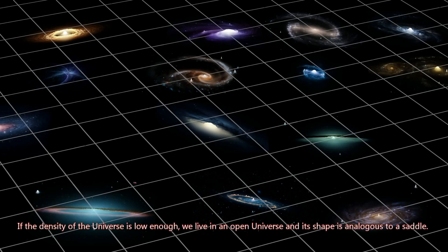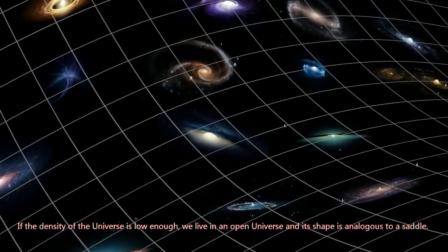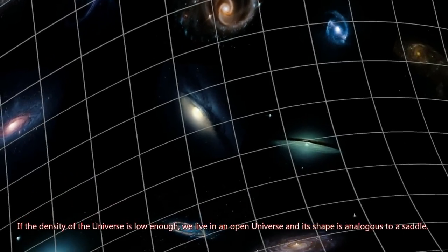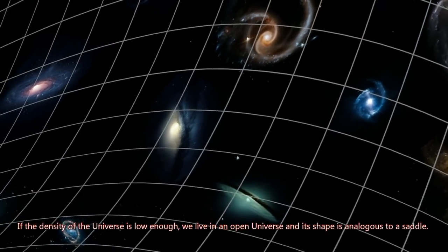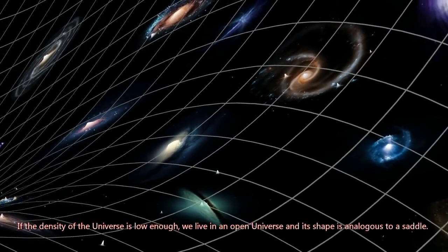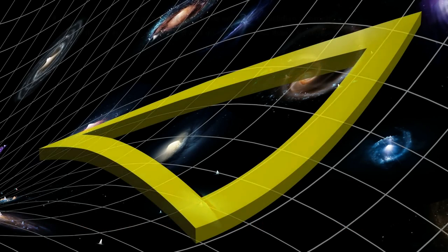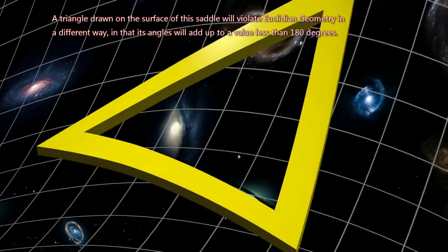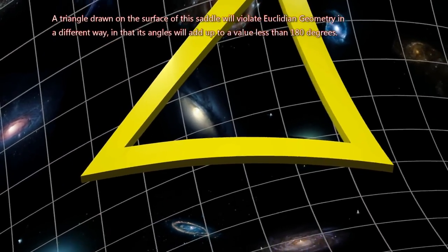If the density of the universe is low enough, we live in an open universe, and its shape is analogous to a saddle. A triangle drawn on the surface of this saddle will violate Euclidean geometry in a different way, in that its angles will add up to a value less than 180 degrees.